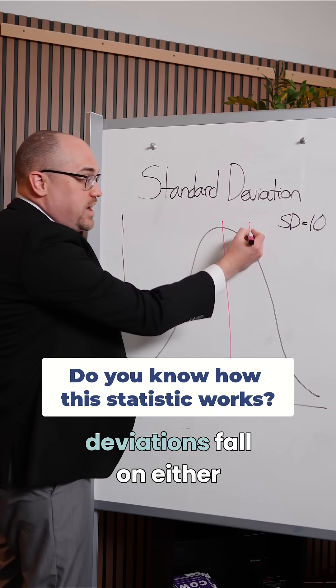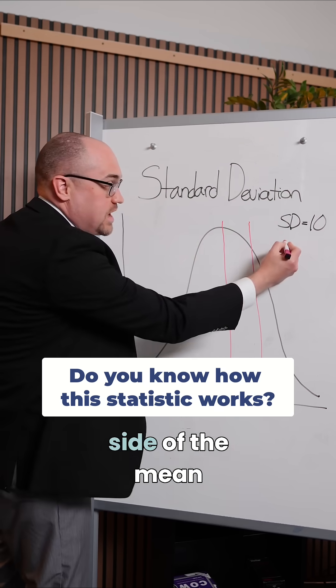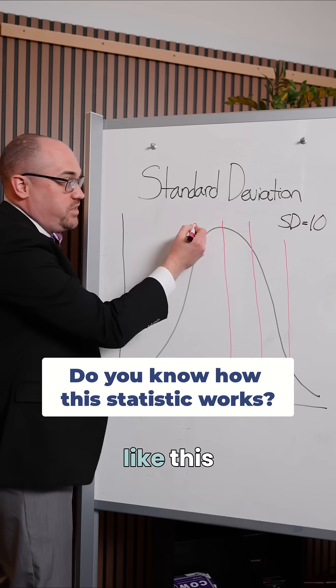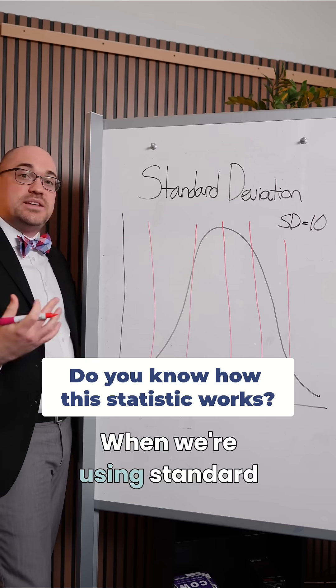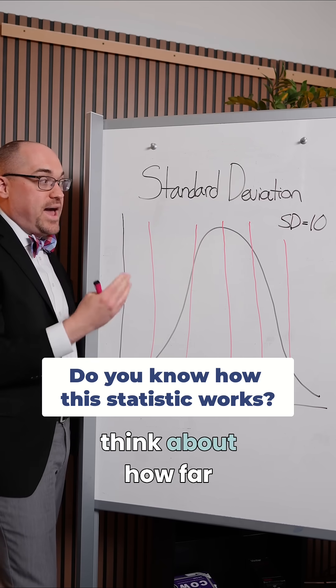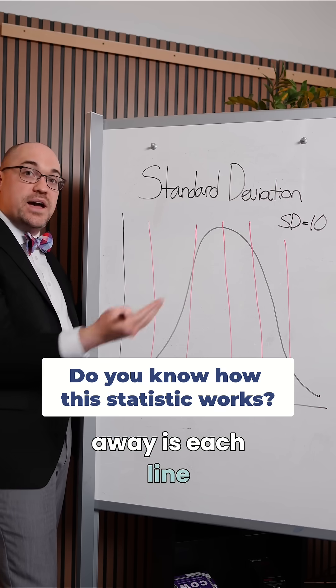And then our standard deviations fall on either side of the mean like this. When we're using standard deviation, we want to think about how far away is each line from the average.